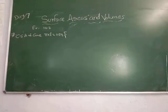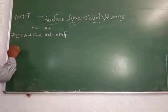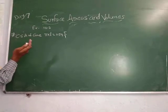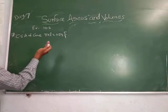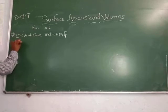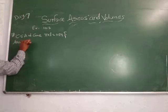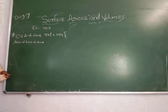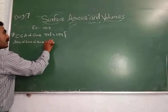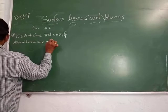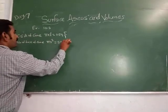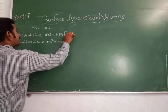Area of its base means what is the shape of the base of a cone? It is a circle. So area of base of cone, according to our formula, pi R square equals 254 and 4 by 7 centimetre square.